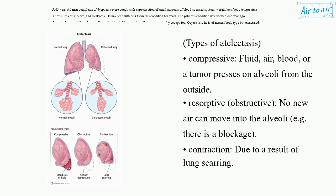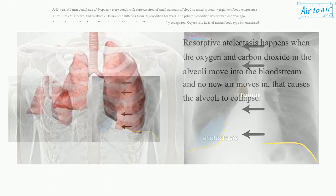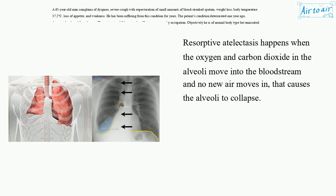Types of atelectasis. Compressive — fluid, air, blood, or a tumor presses on alveoli from the outside. Resorptive/obstructive — no new air can move into the alveoli, e.g. there is a blockage. Contraction — due to lung scarring. Resorptive atelectasis happens when the oxygen and carbon dioxide in the alveoli move into the bloodstream and no new air moves in, causing the alveoli to collapse.